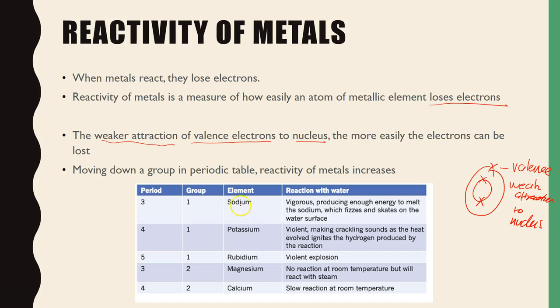So as you move down that particular group, so down this group in group 1, you can see that the elements become even more reactive. So sodium is at the top of group 1 almost, potassium is underneath that and rubidium is down at the bottom. It gets increasingly more reactive because they have less control of their valence electrons as they have more shells and have a weaker attraction to the nucleus.